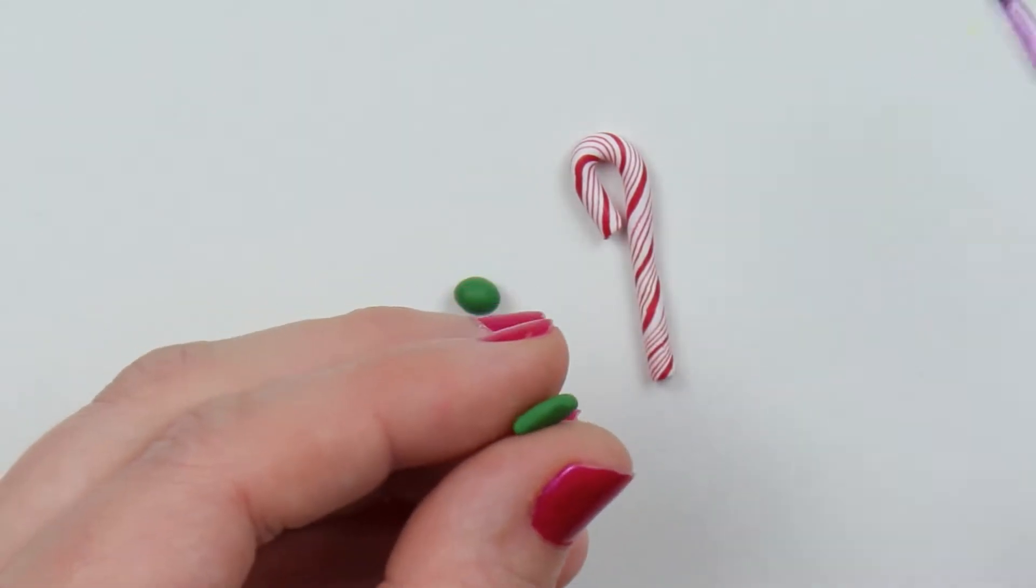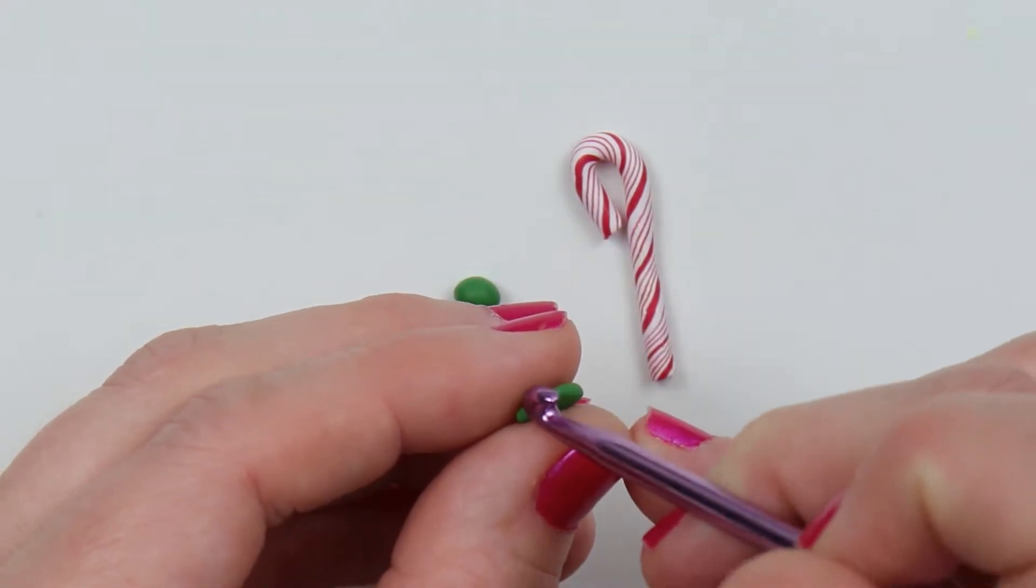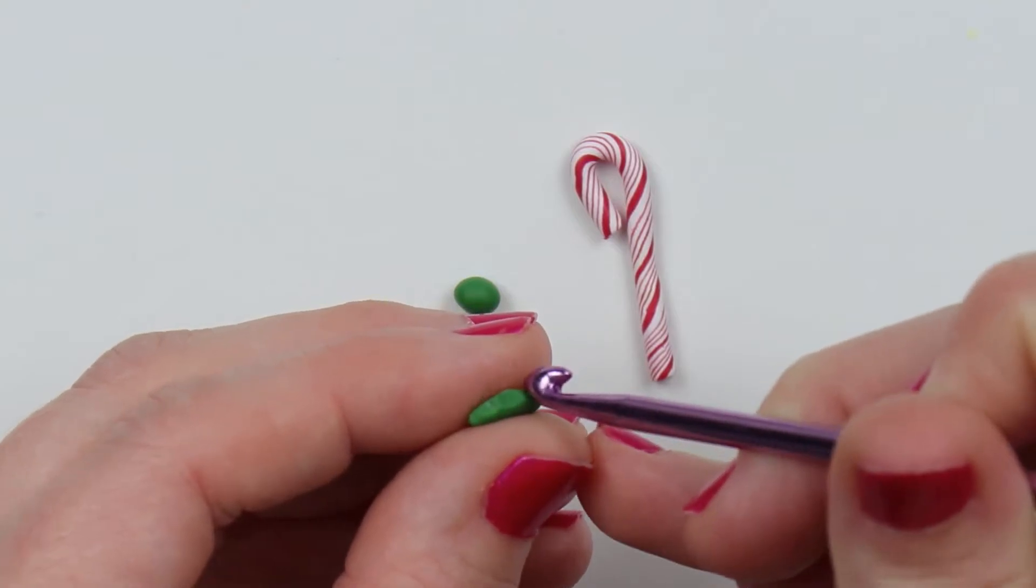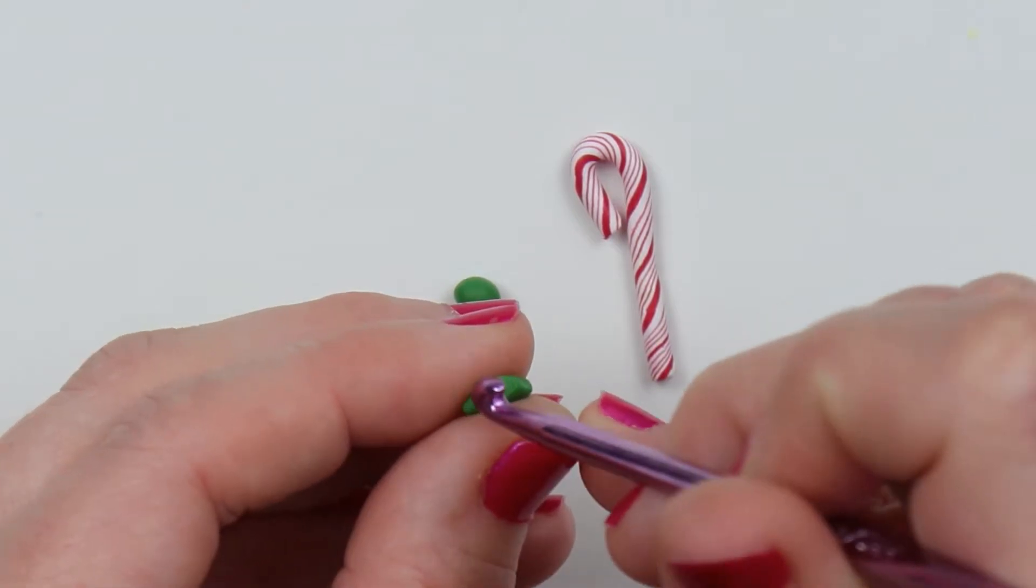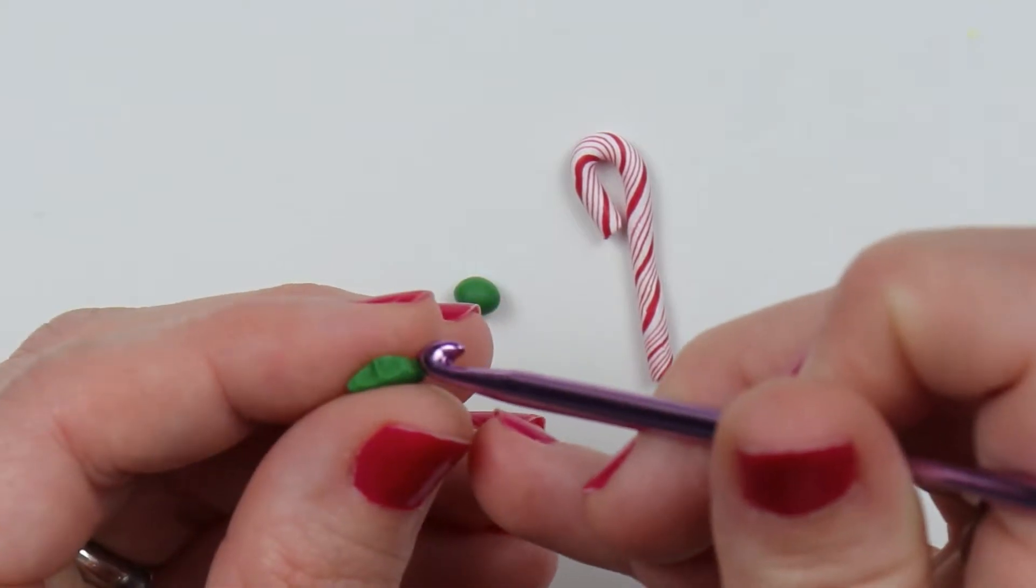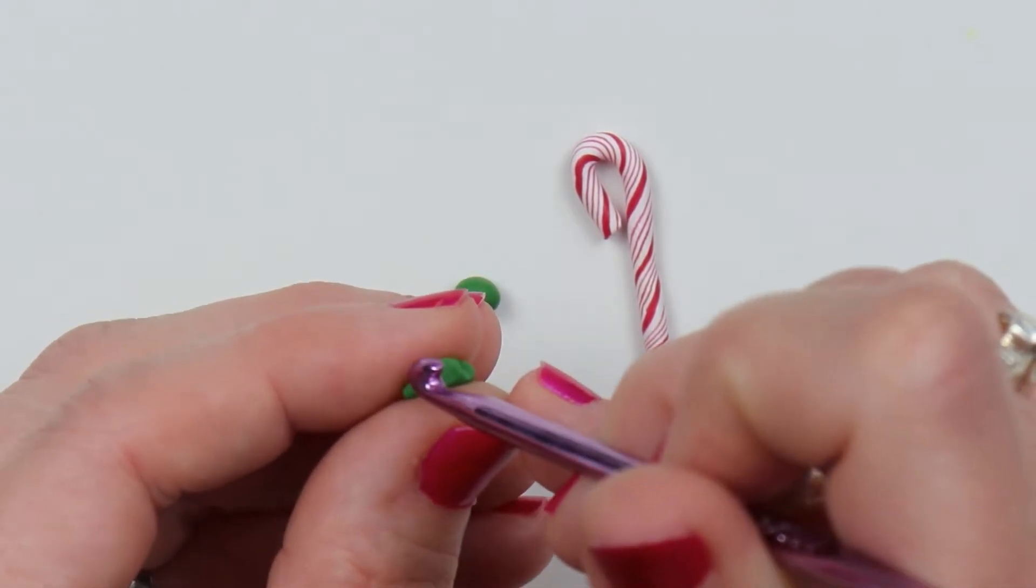And then I'll use this crochet hook to put little grooves in the side for my holly leaves. I'll make three little dents, and then I'll just keep going back over it until they're as deep as I want them to be.